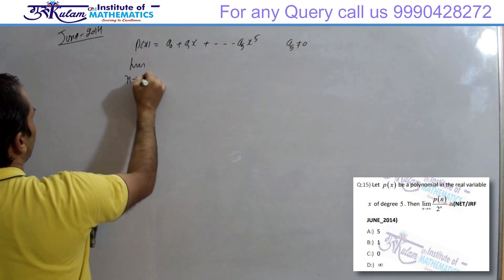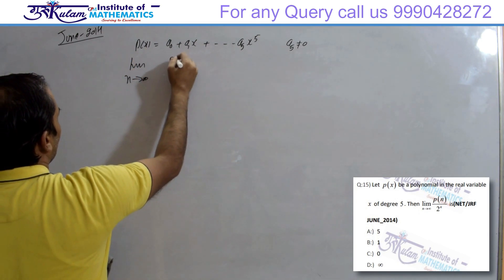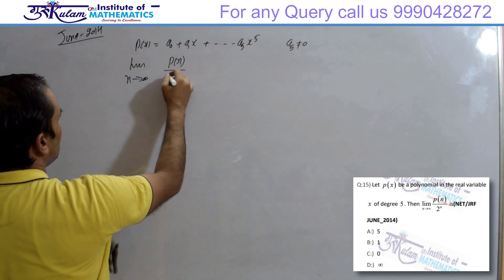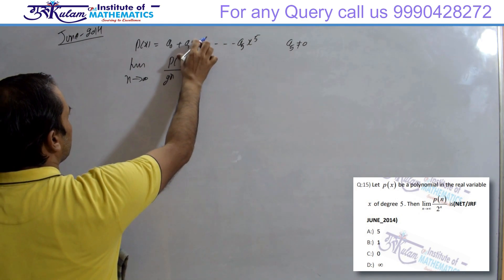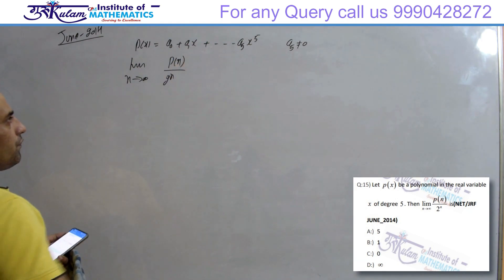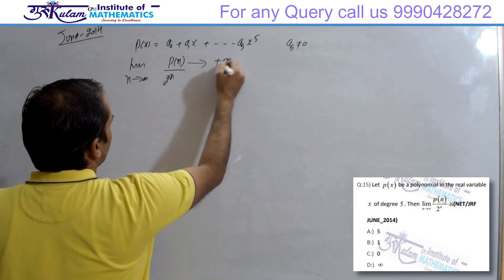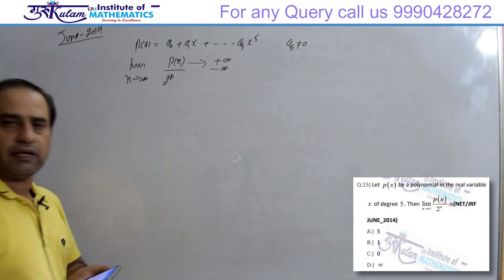और उसके बाद आपसे पूछा, limit N tends to infinity P(N) by 2 to the power N की value find करवा रहा है. तो अगर N tends to infinity पे बात करेंगे, तो ये quantity या तो plus infinity पे जाएगा, या minus infinity पे tend करेगा, depend करेगा A5 क्या है.